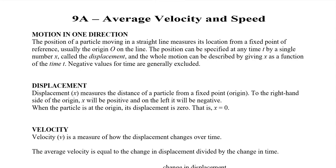We are starting motion and rates, beginning with 9a: average velocity and speed. The position of a particle moving in a straight line measures its location from a fixed reference point, usually the origin. The position can be specified at any time by a single number, x. Displacement measures the distance of a particle from the origin — positive to the right, negative to the left.